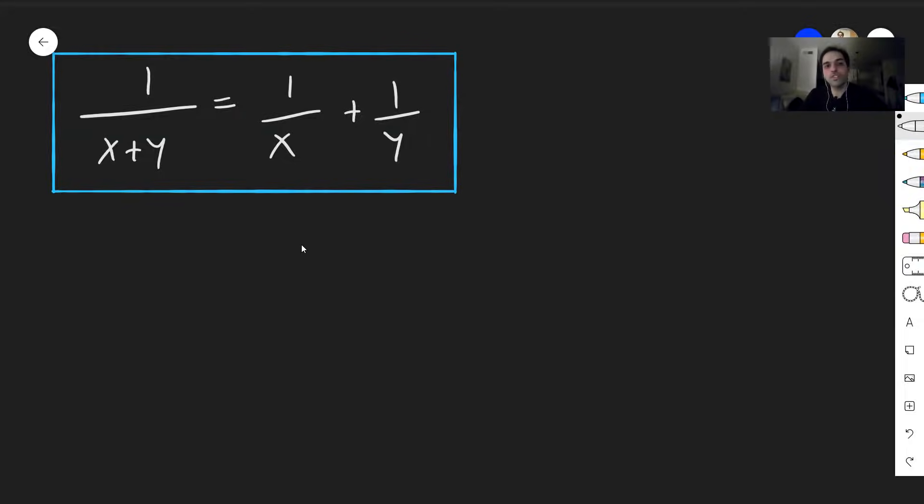And you'll see it's not hard to do because let's put everything on a common denominator. 1 over x plus y, that becomes y over xy plus x over xy, so 1 over x plus y.